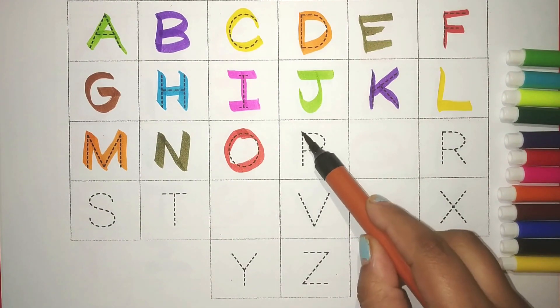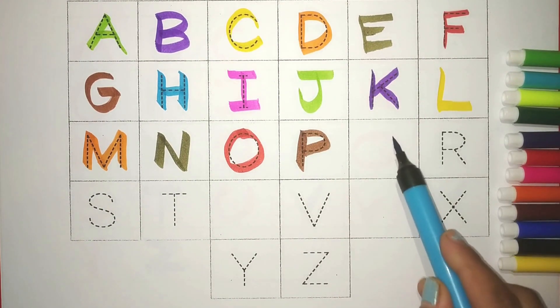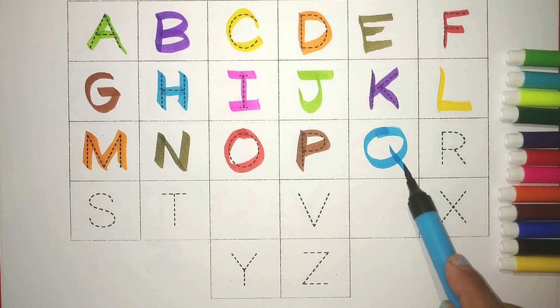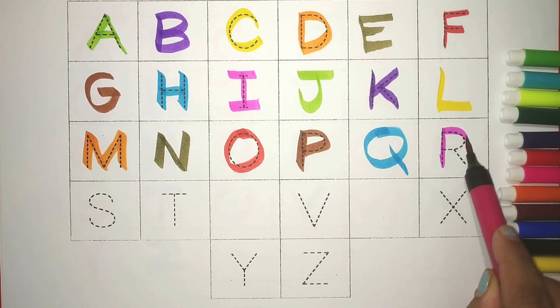Brown P. P for penguin. Blue Q. Q for queen. Pink R. R for rainbow.